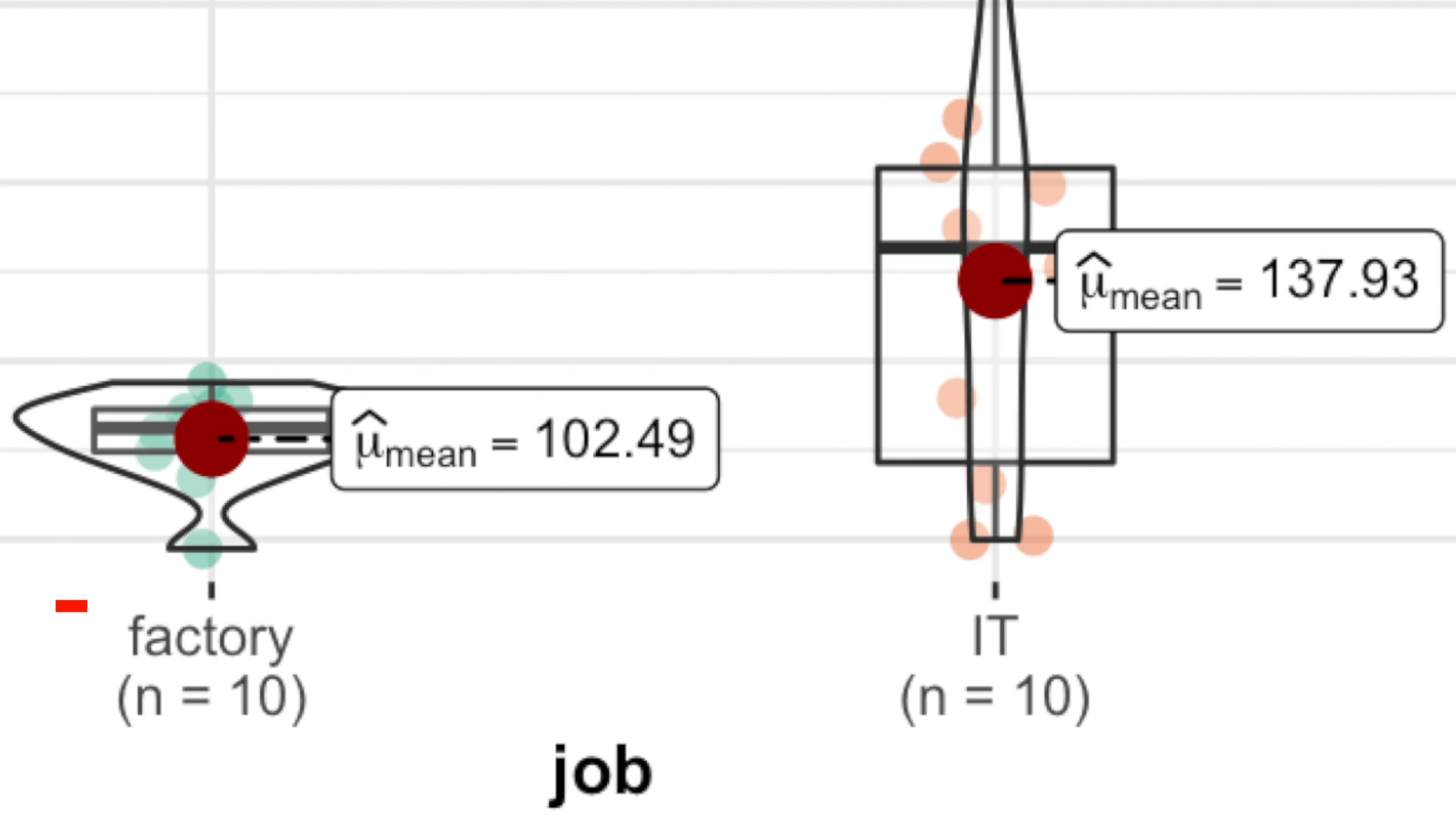Secondly, we only have 10 people in each sample, which is simply not enough to conclude that our huge difference appeared not by accident.